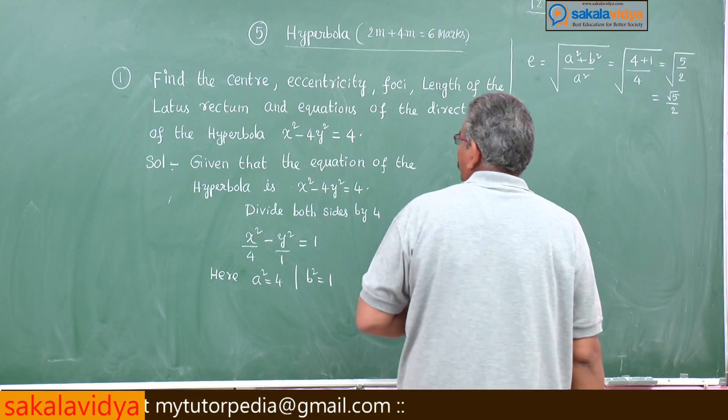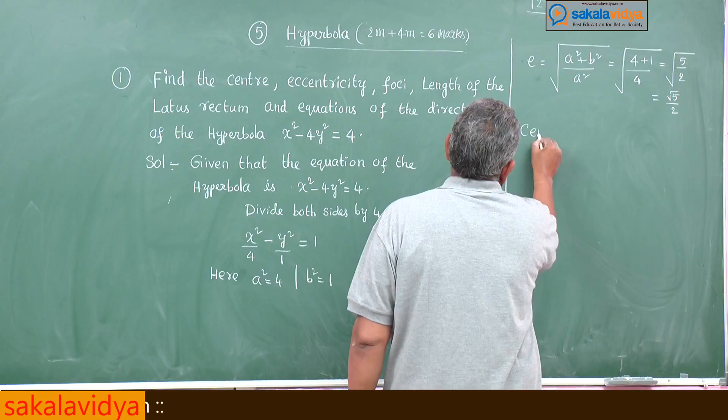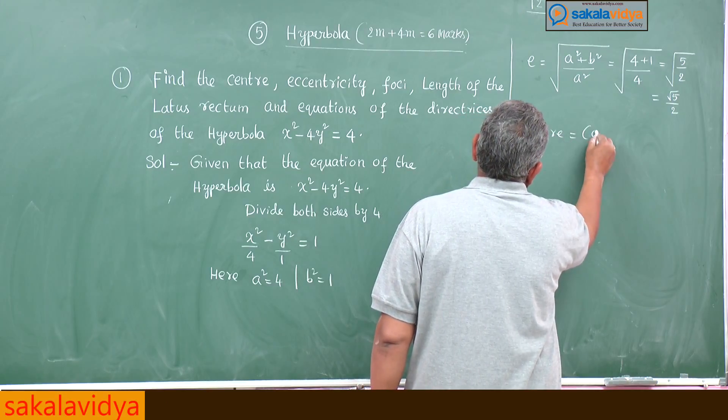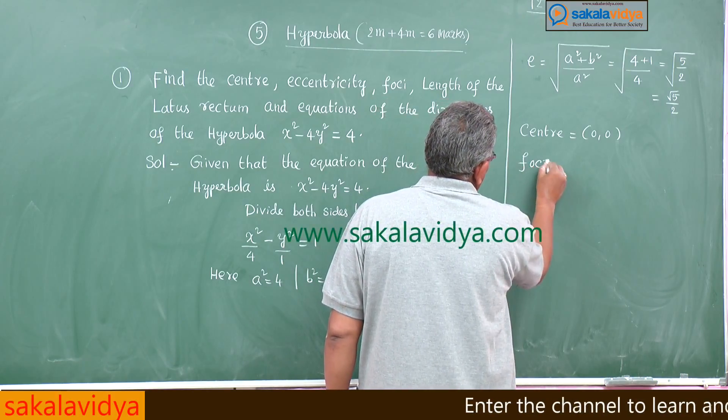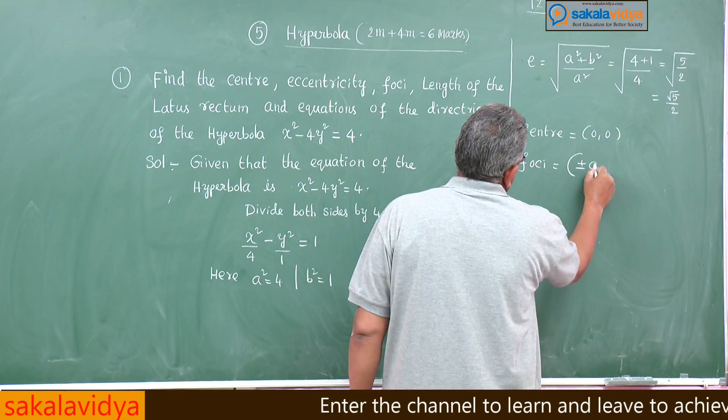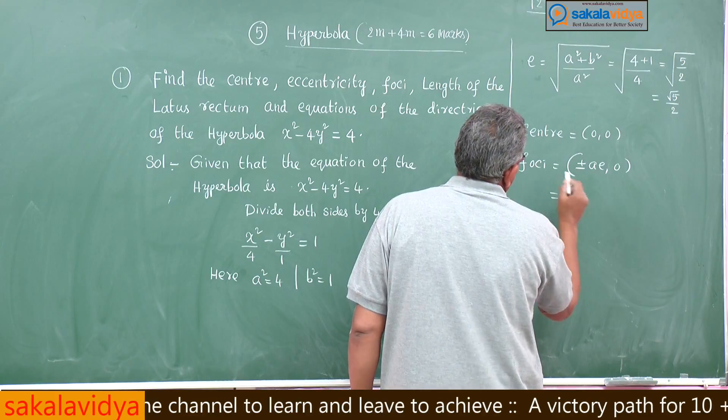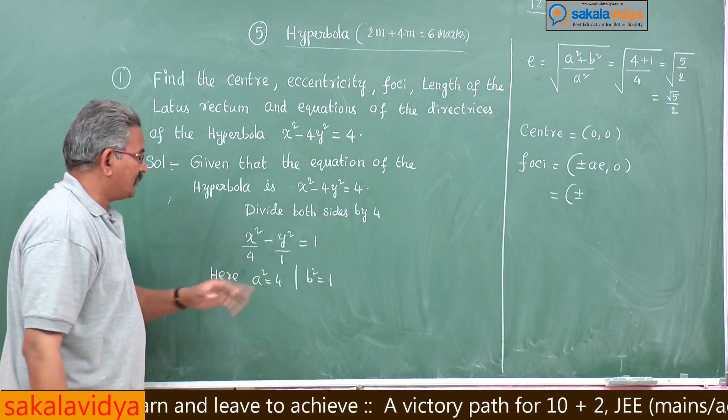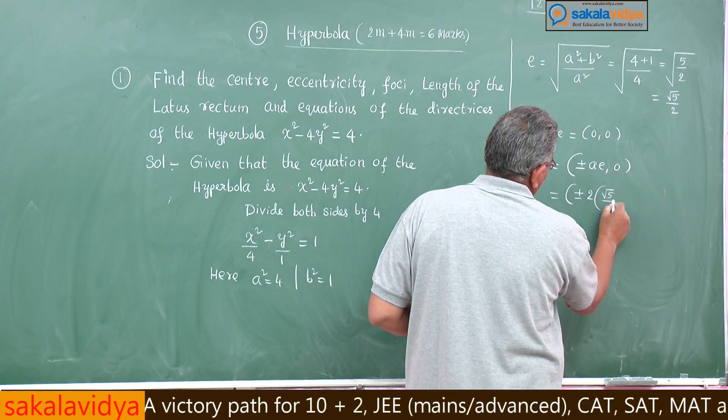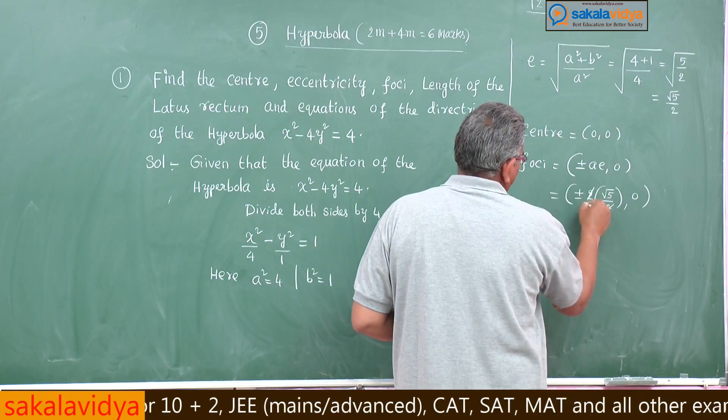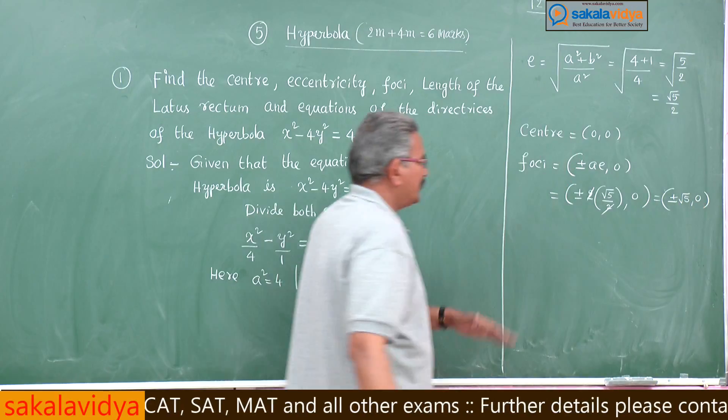This is the E value. Next we have to find out center, center is 0 comma 0. Next, foci, plus or minus ae comma 0. Plus or minus, a square is equal to 4 that will be 2 into root 5 by 2 comma 0. Two gets cancelled, plus or minus root 5 comma 0, this is foci.